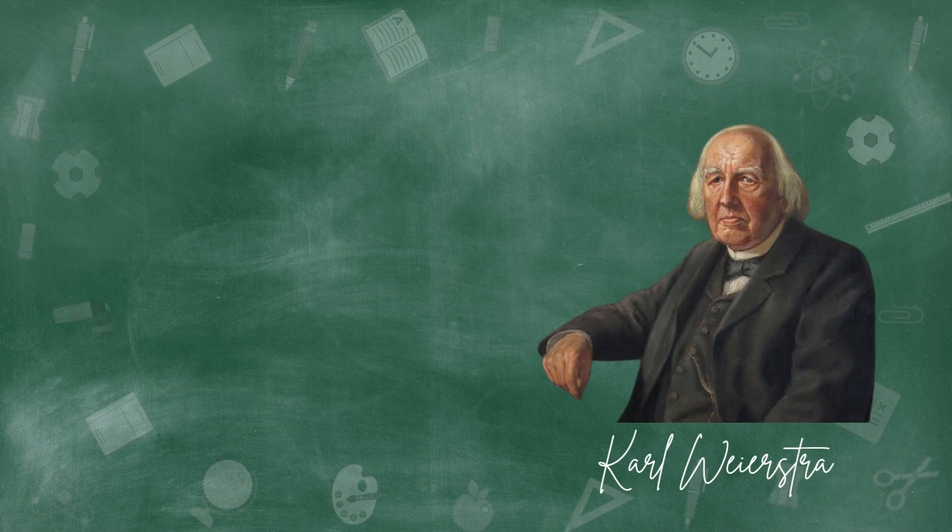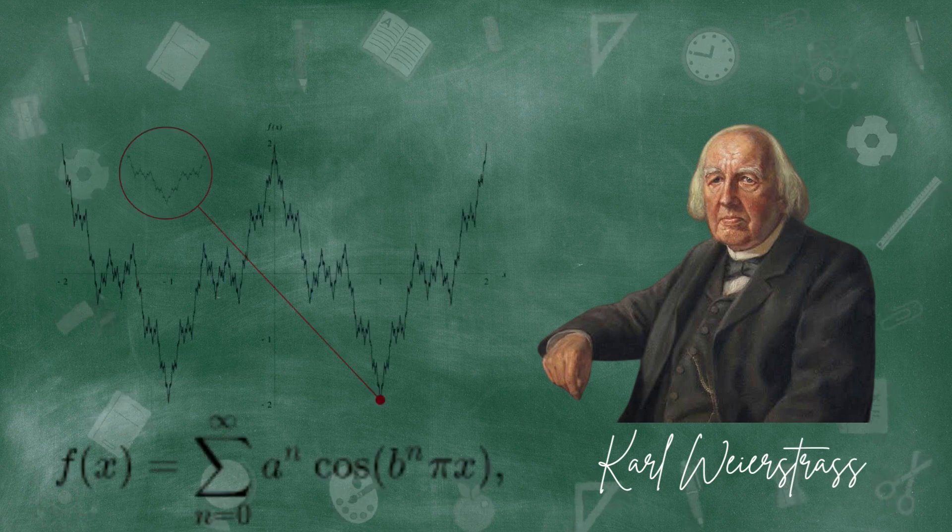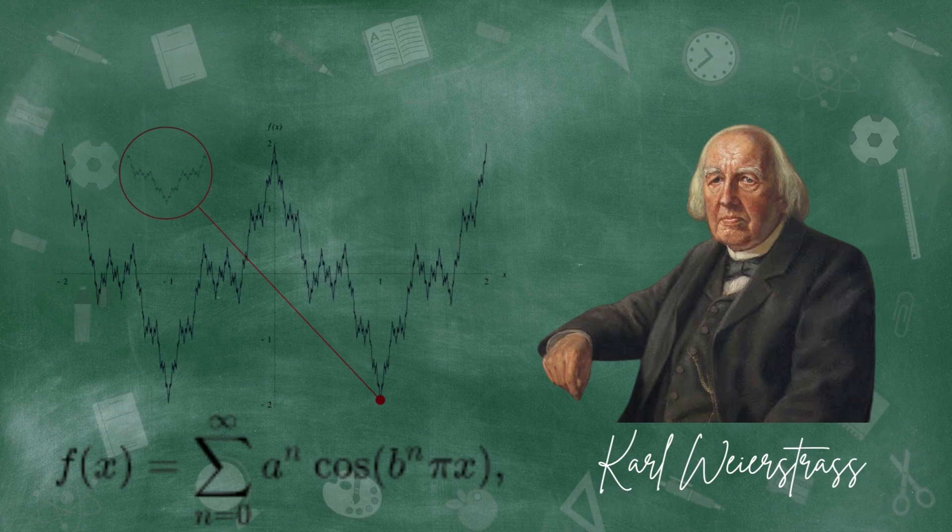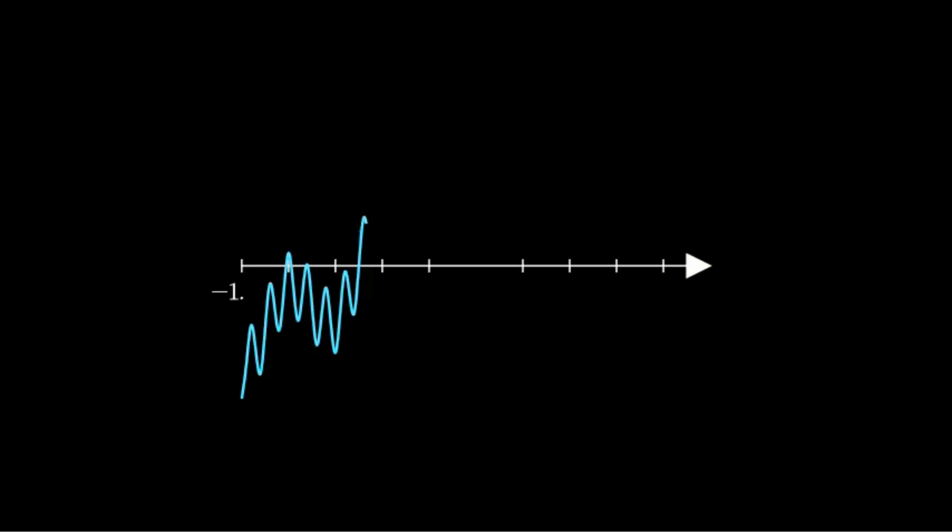Then came a shock. In 1872, Karl Weierstrass constructed a function that was continuous everywhere, but differentiable nowhere. It looked smooth, but under the microscope, it was jagged and wild, like a mathematical coastline.